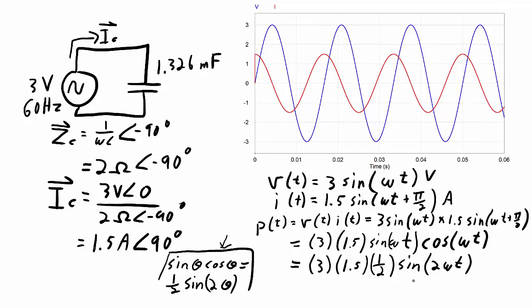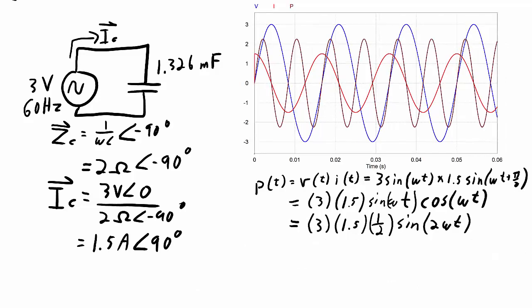What that is saying is that the power is going to be at a frequency that is 2 times the frequency of the voltage and the current. This new plot adds the power to the graph — you can see the power in brownish red, and it has a frequency that is twice the voltage and twice the current, which totally makes sense based on what we've just calculated. Finishing the calculation gives the peak of the power: 3 times 1.5 times one half, which is 4.5 over 2, or 2.25 sine 2 omega t. That amplitude matches what we see for the power, and the frequency is twice the frequency of the voltage and current.